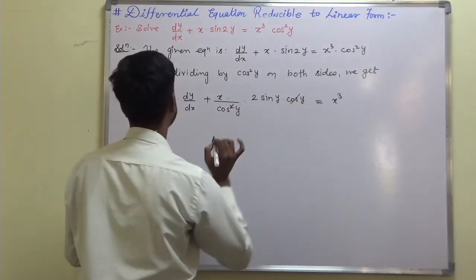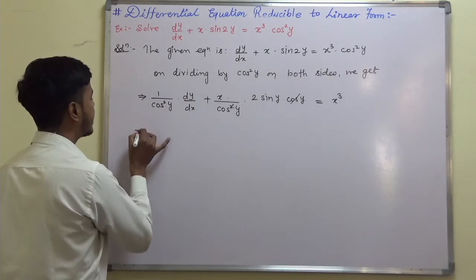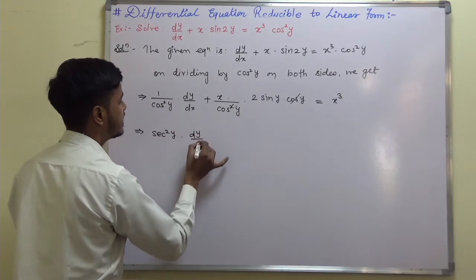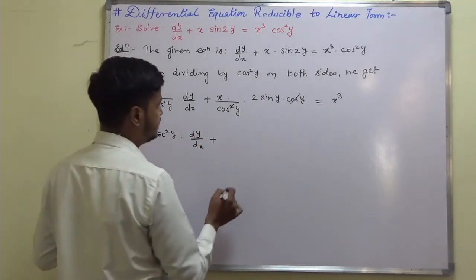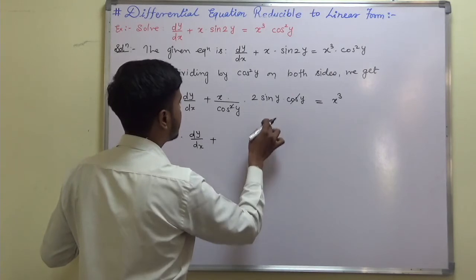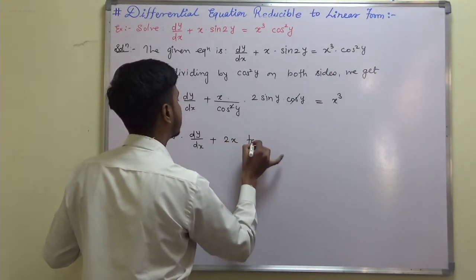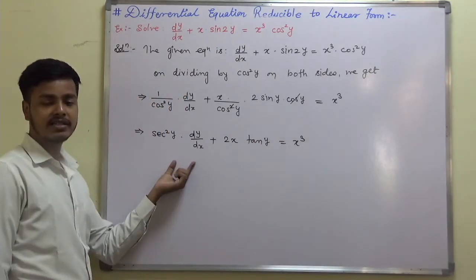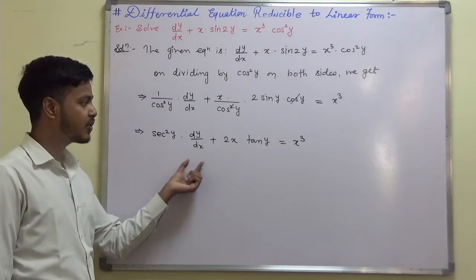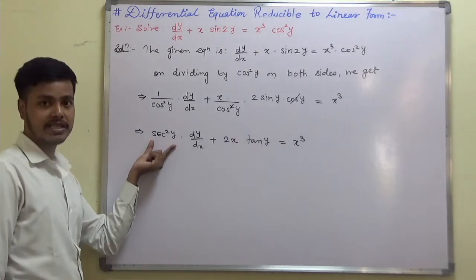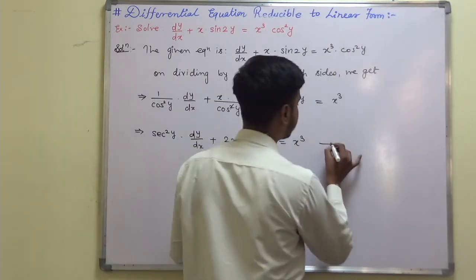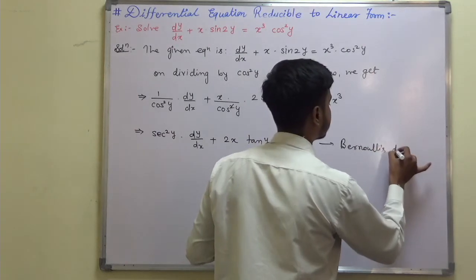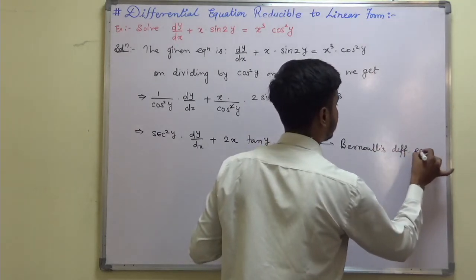After cancellation, 1/cos²y is sec²y·dy/dx, and sin/cos gives tan, so this becomes: sec²y·dy/dx plus 2x·tany equals x³. This is the another form of Bernoulli's equation because whatever function we have here, its derivative is present as well. This is Bernoulli's differential equation.